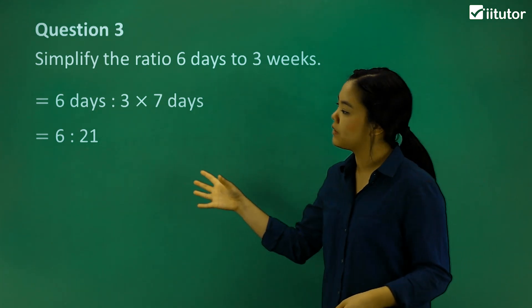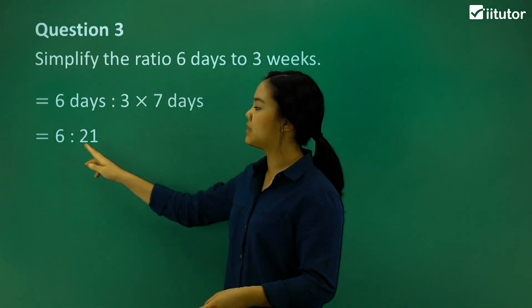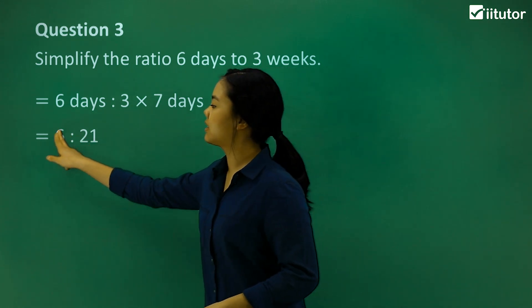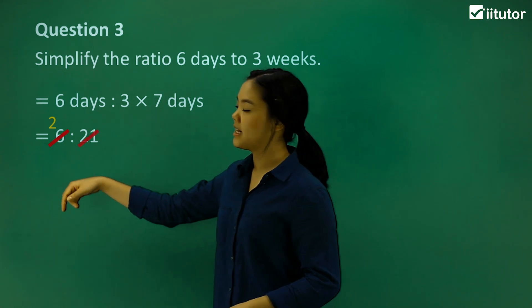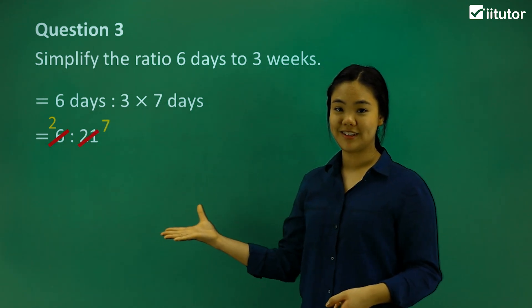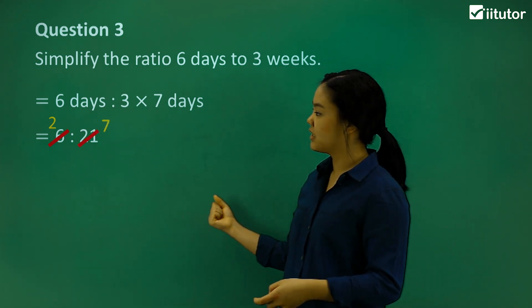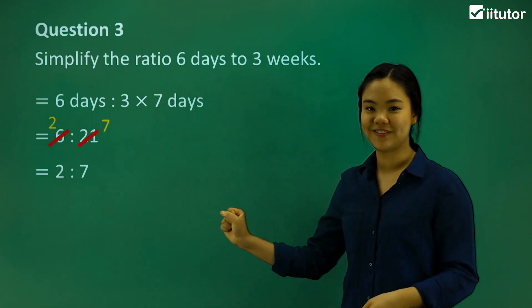And how can we make that even more simpler? We divide it by 3. So cancel that out. Divide it by 3, that's 2. Cancel this out. Divide it by 3, that's 7. So our ratio is 2 to 7.